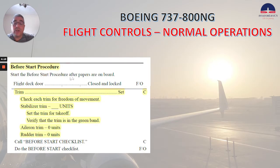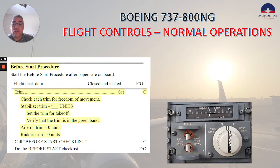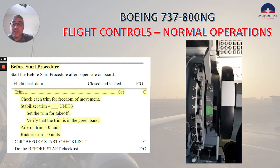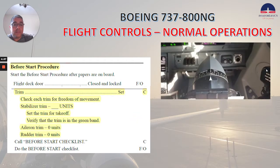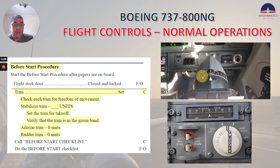In the before start procedure, the captain needs to check the trim. Check each trim for freedom of movement. You see here the rudder trim, and here the aileron trim. Stabilizer trim — set to the number of units you get. Set the trim for takeoff and verify that the trim is in the green band. Aileron trim: zero units. Rudder trim: zero units.